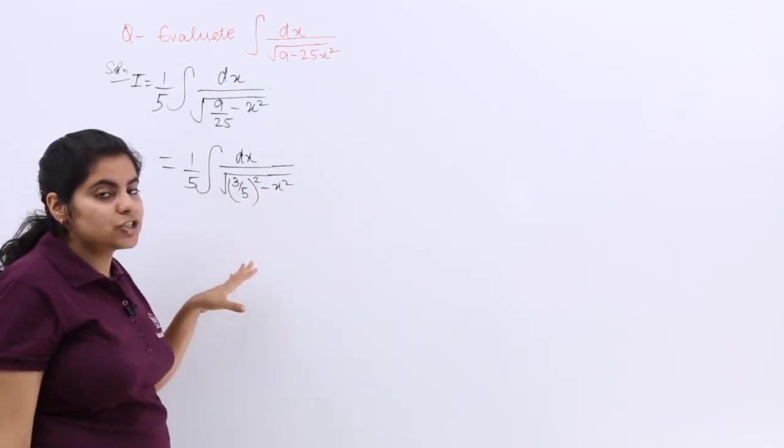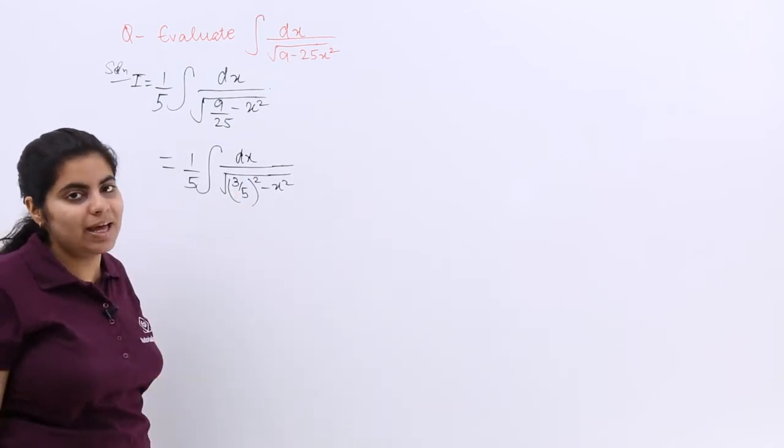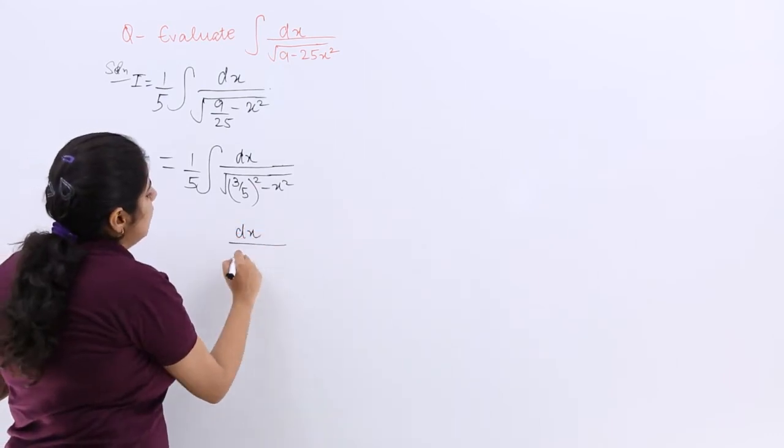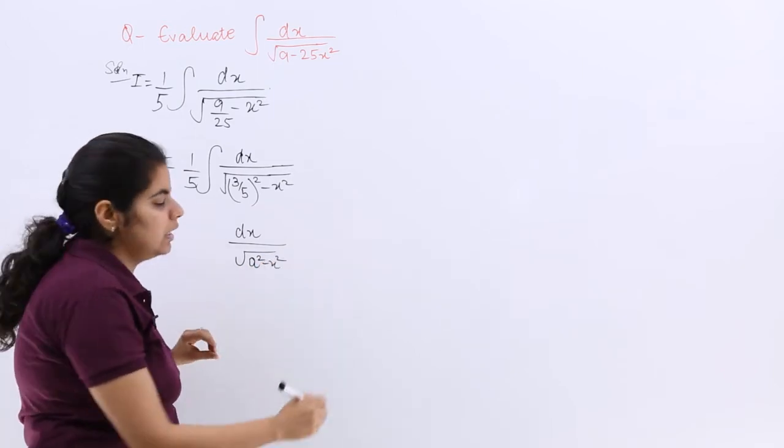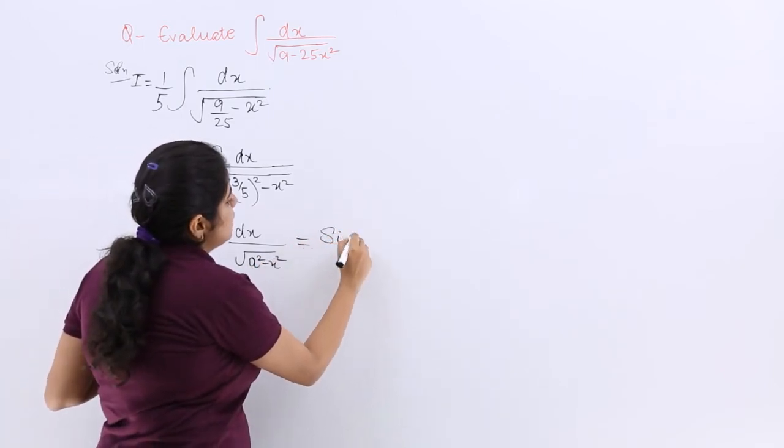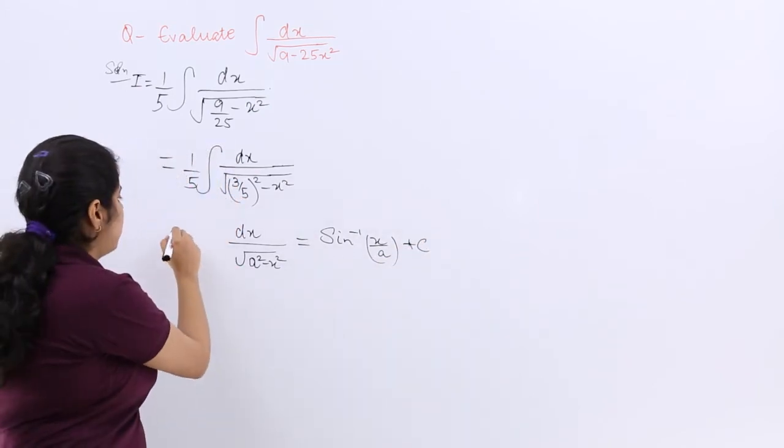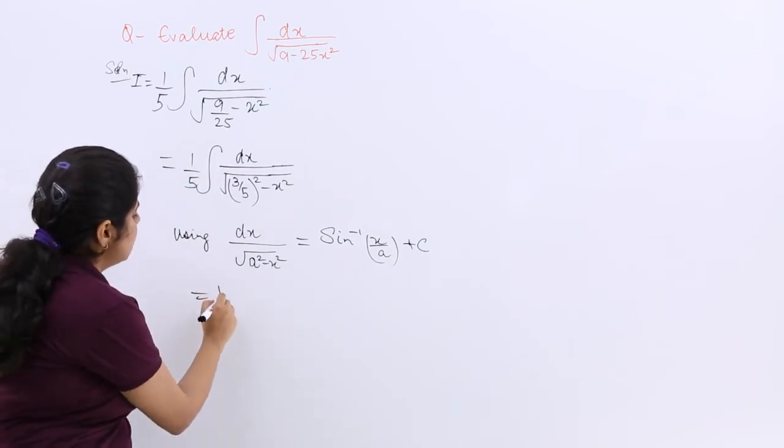Now does the question not seem to you as under root a square minus x square in the denominator? And now I already know what is the integral when I have something of this sort. I have a formula especially which is nothing but sine inverse x by a plus c. So using this formula, I am going to simplify it.